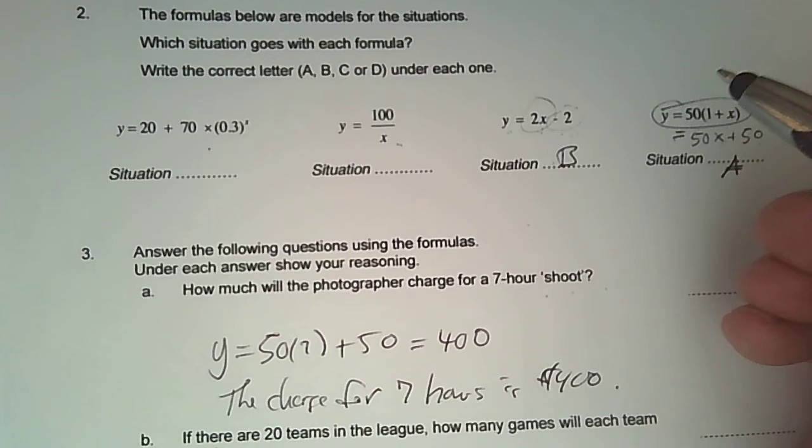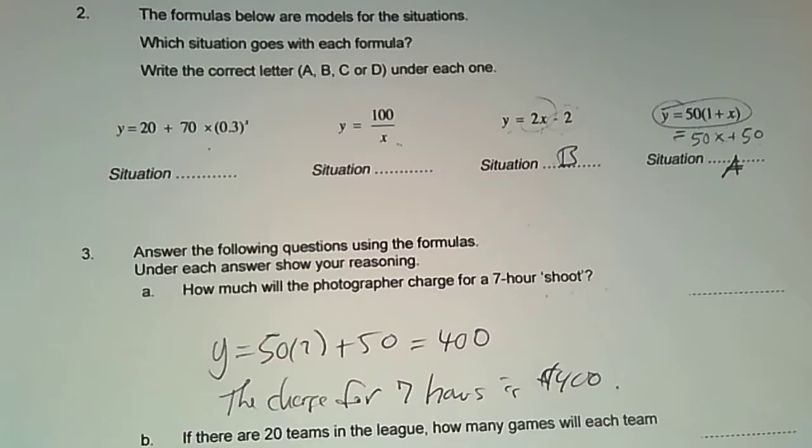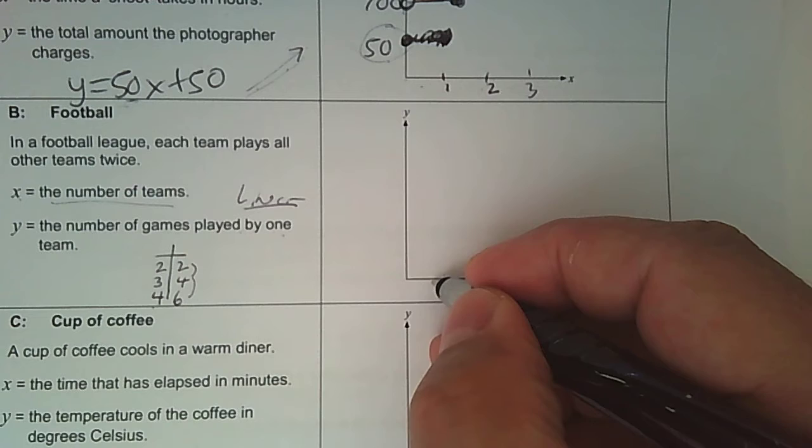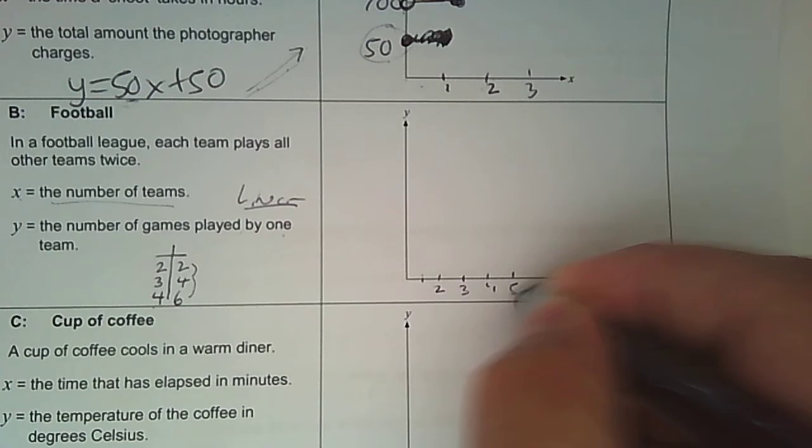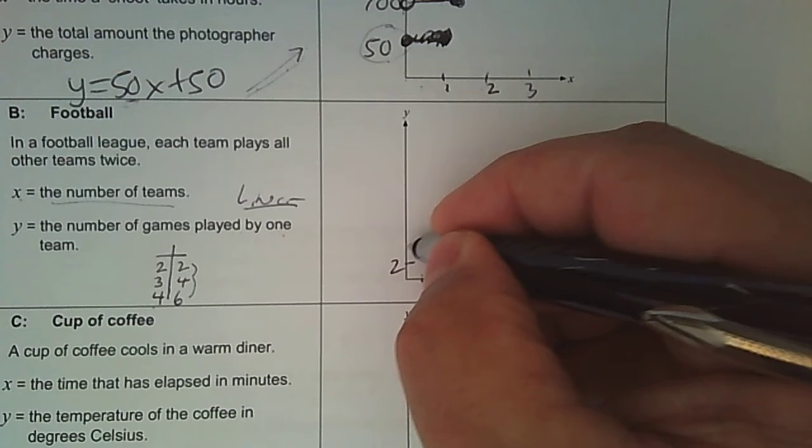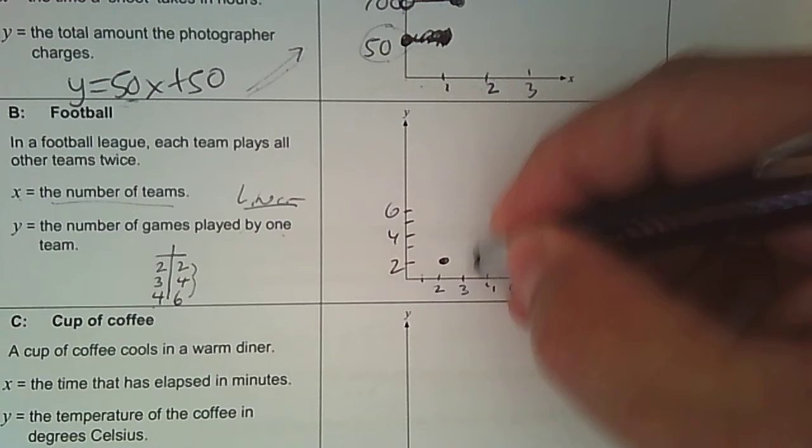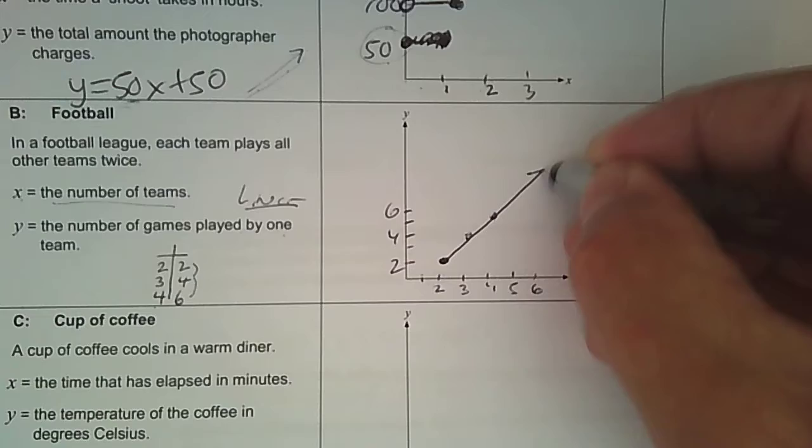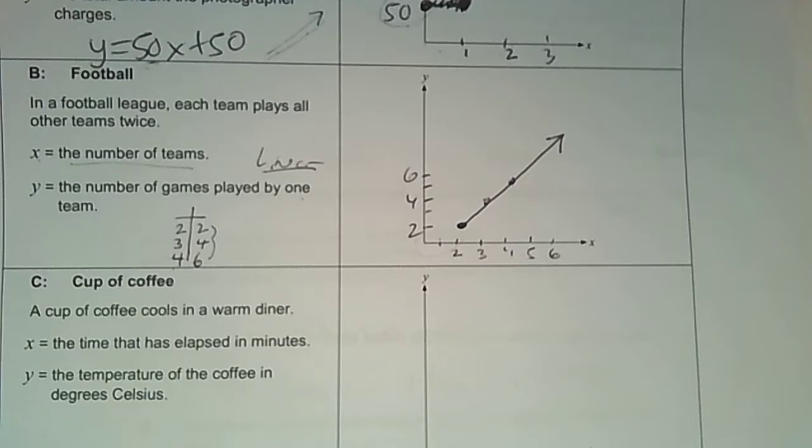So let's graph that. So we're going to start with two, and then four, six, and so on. Notice there's no part of the graph here at zero and one.